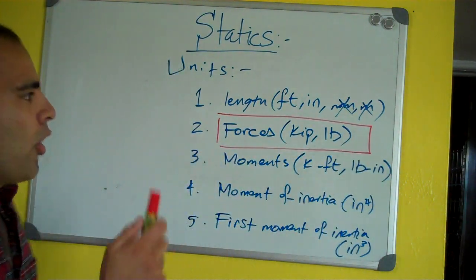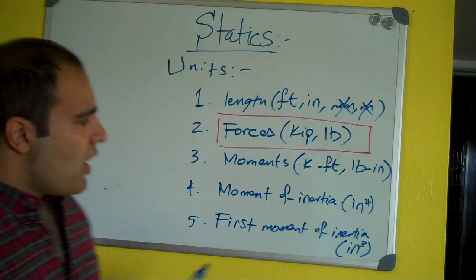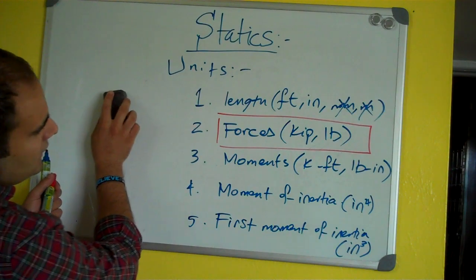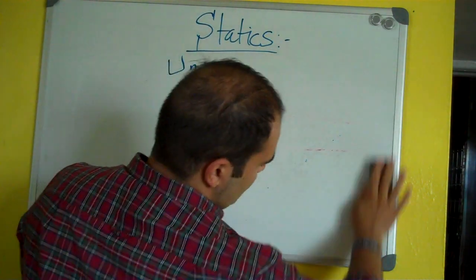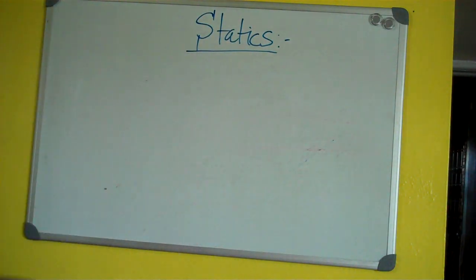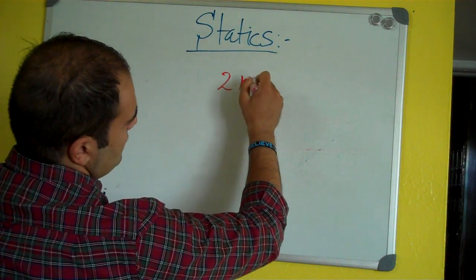What is kip? So, kip, if you don't know what is kip, kip is a thousand pounds. So, for example, you're saying two kip, okay? That means two thousand pounds.